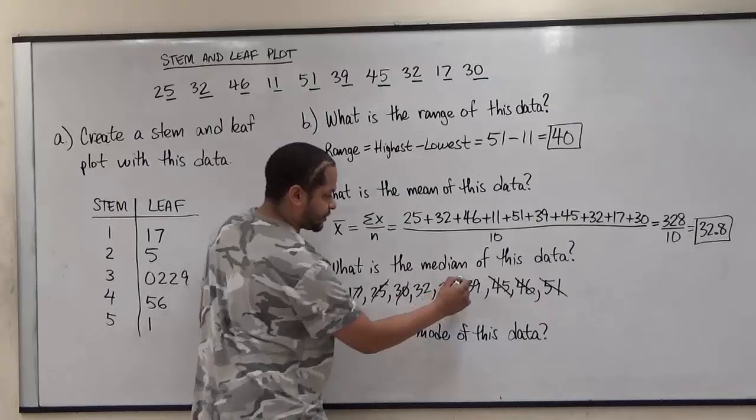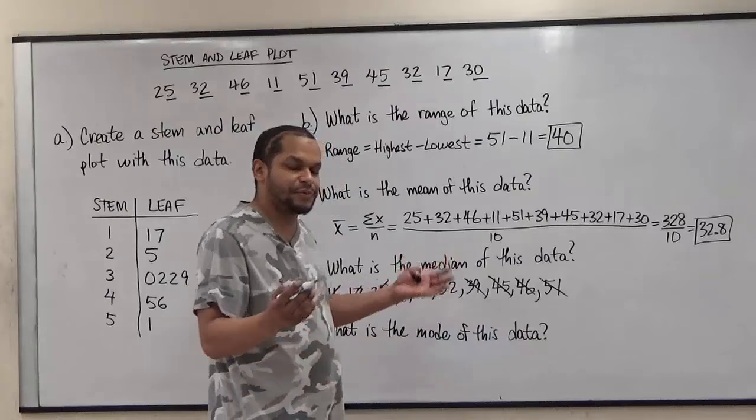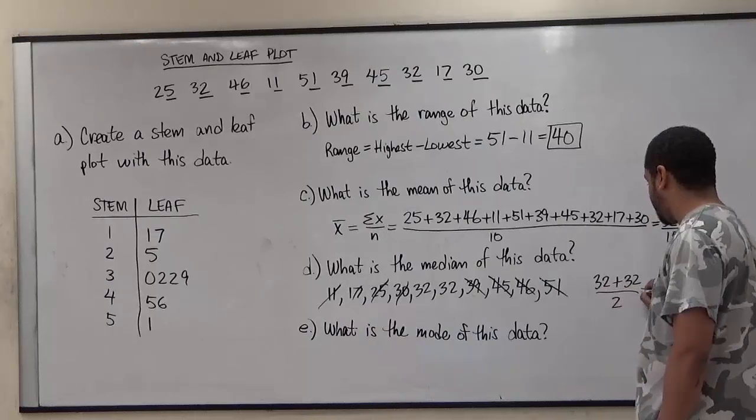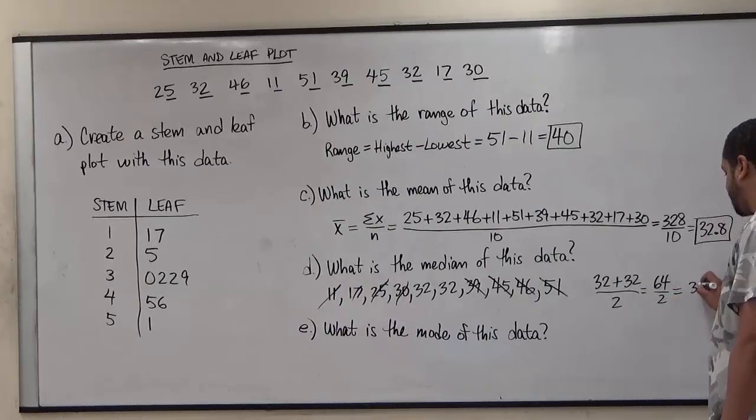Now usually since they're the same number we can just say the median is thirty-two. But what we actually have to do is take both values, in case our numbers are different, add them up and divide them by two. So the sum of these makes sixty-four over two, which when divided by two gives us thirty-two again. This produces our median.